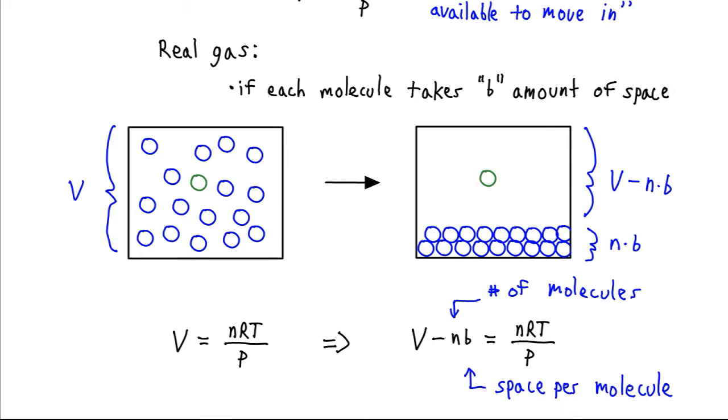So that's going to be our correction that we're going to make. Instead of having the volume be just the volume of the container, we now realize that the free volume for molecules to wander around in is actually the volume of the container minus n times B. And that is what should be equal to nRT over P.